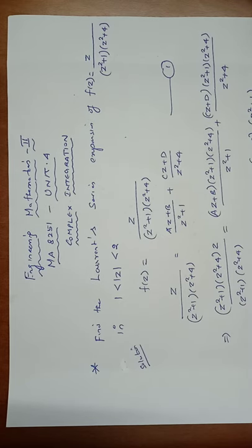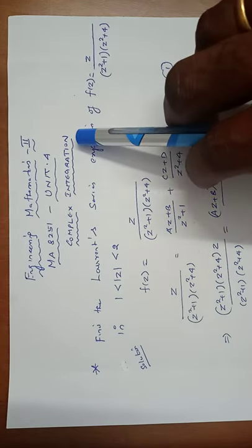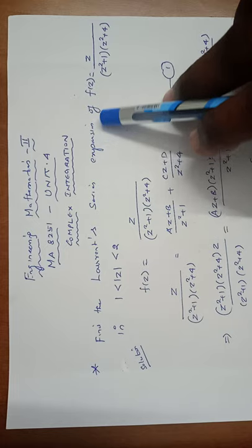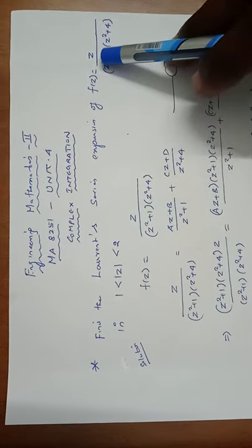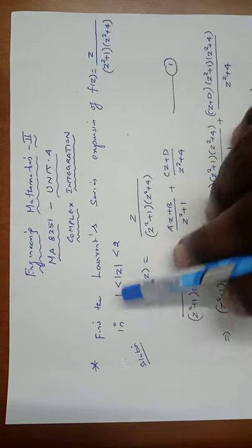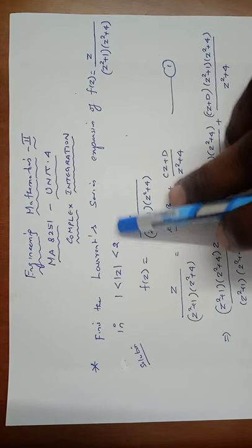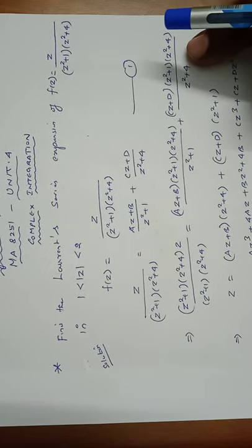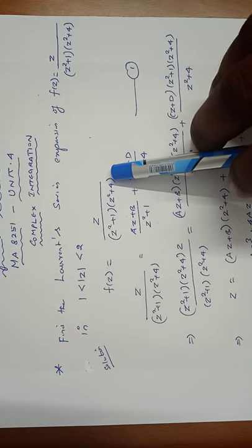Engineering Mathematics 2, MA8251, unit 4: Complex Integration. Find the Laurent series expansion of f(z) = z / ((z² + 1)(z² + 4)) in the region 1 < |z| < 2. This is the statement of the problem, so f(z) = z divided by (z² + 1)(z² + 4).